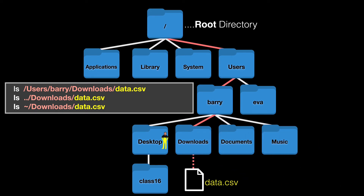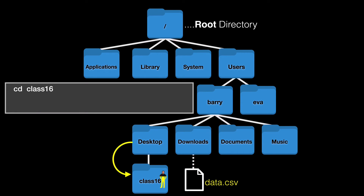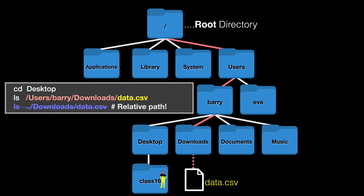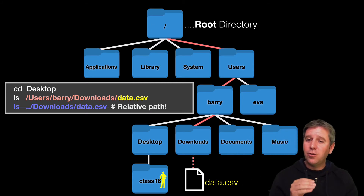For example, if my little yellow self is sitting in /users/barry/desktop and I cd into class16, I can just write cd class16 because it's relative to where I am. Now in class16, to read data.csv in the downloads folder, the absolute path still works — it hasn't changed. But I can't use the relative dot-dot approach from here, because dot-dot would drop me to desktop, then try to find a downloads folder off desktop — it won't work and will give an error. The relative path is always sensitive to where you currently are.